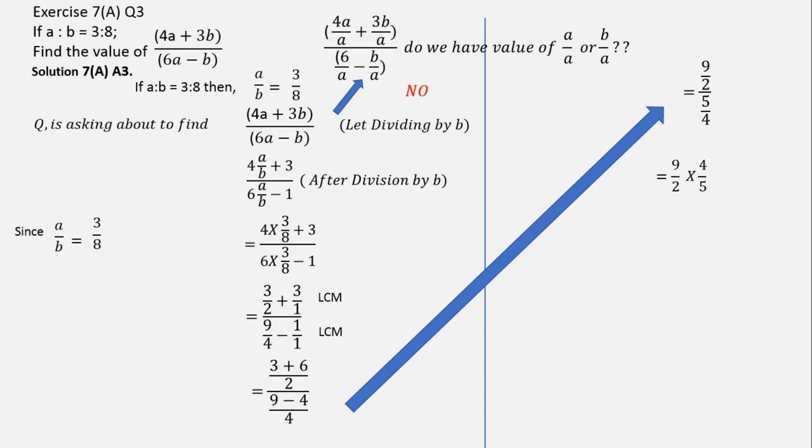That will become 9 by 2 into 4 by 5 because if we multiply the denominator, the value got reversed. So this will become 9 by 2 into 4 by 5 and if we solve this further, we will be getting 18 by 5 and that is your answer.